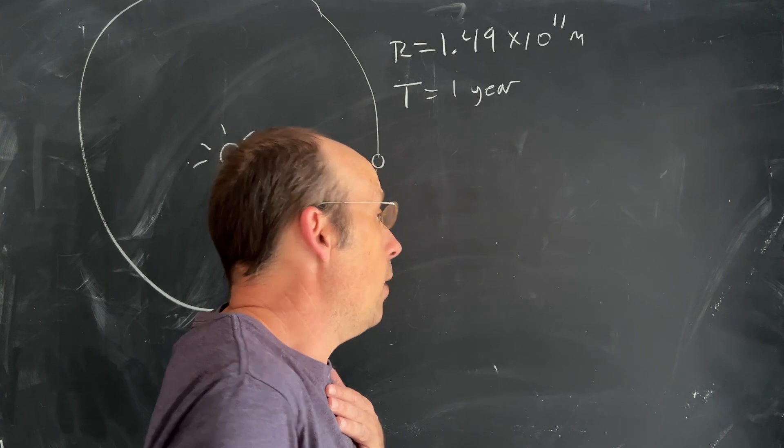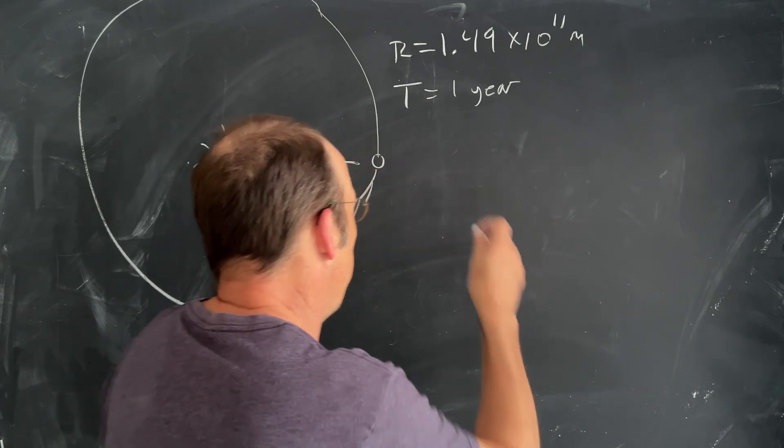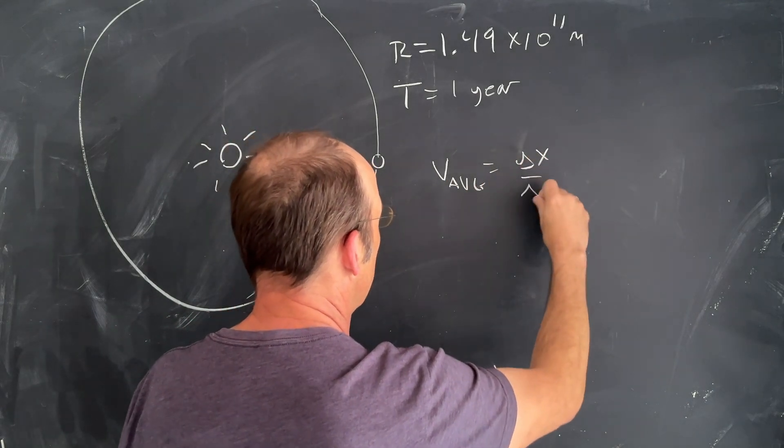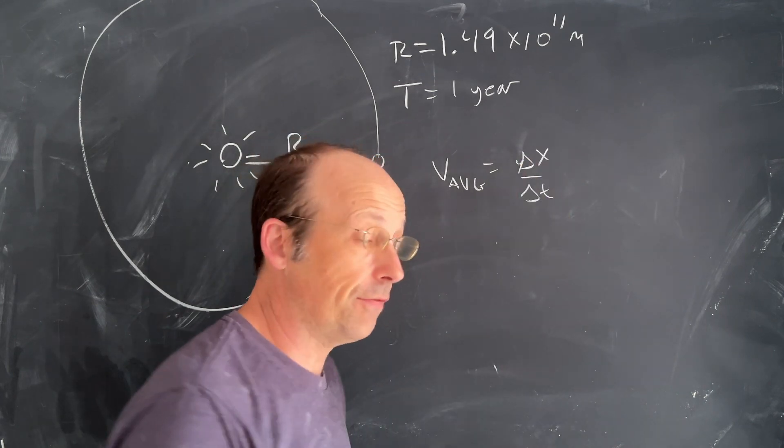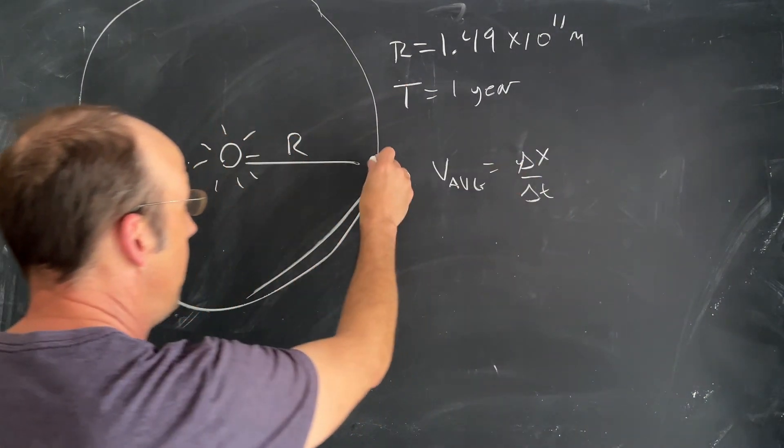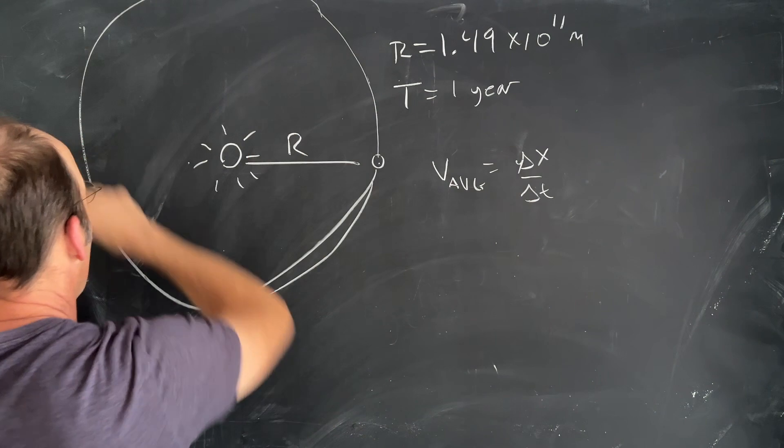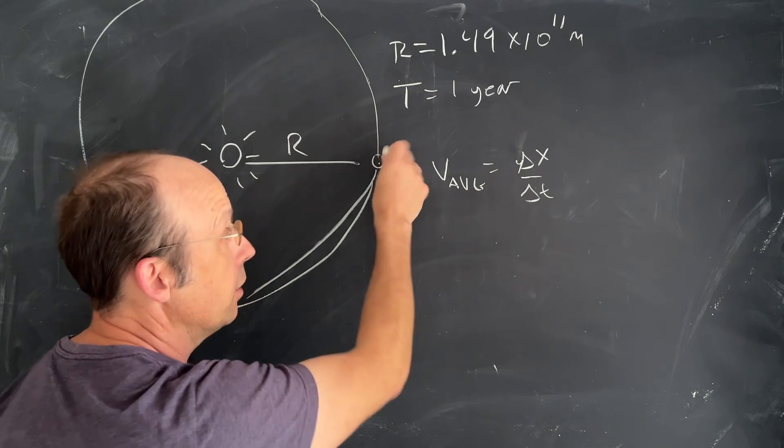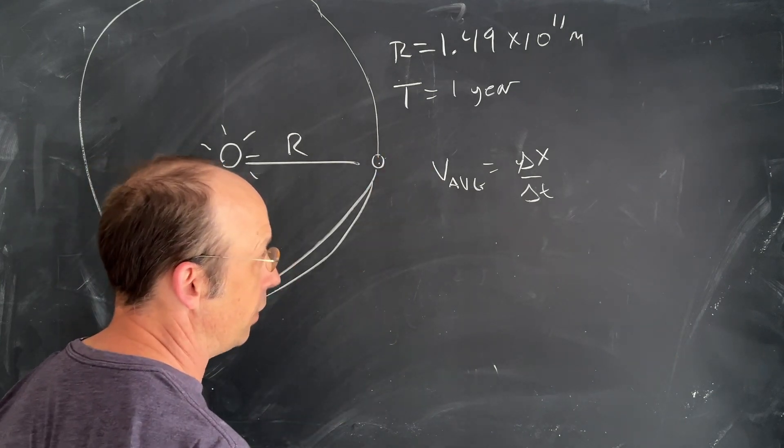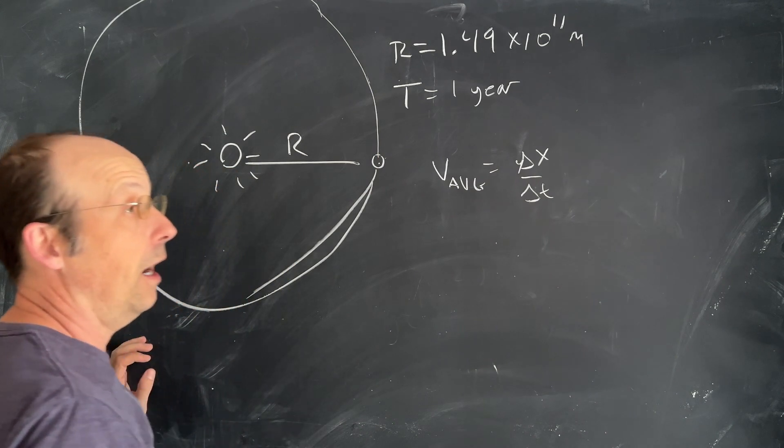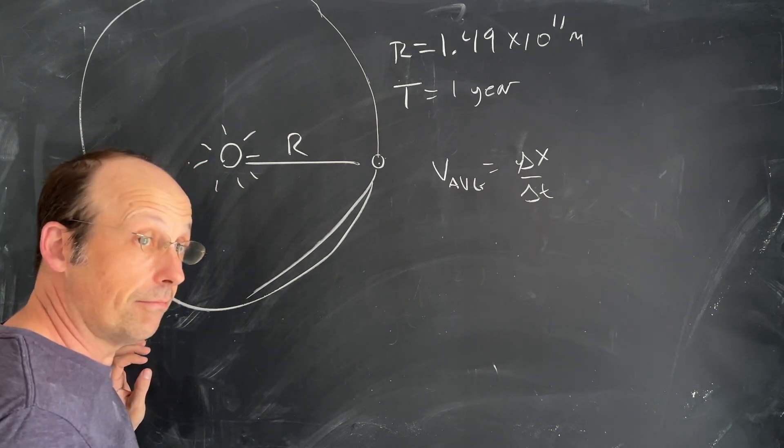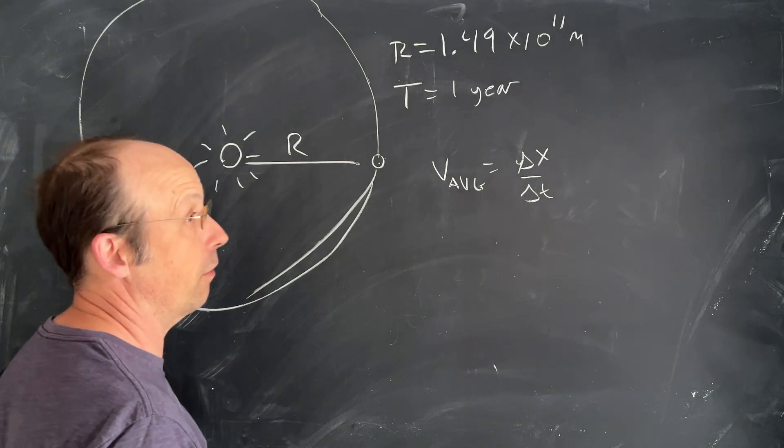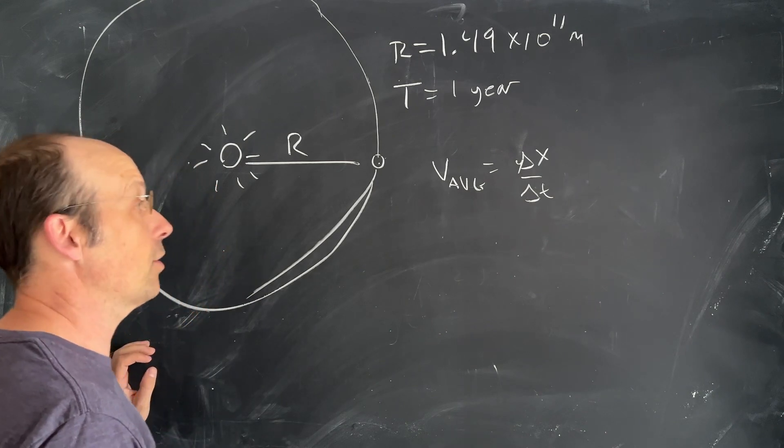We can start with our definition: v_average = Δx/Δt. But we have a problem—if the Earth goes from here all the way around in one year, it's back in the same position. That tells us the average velocity is zero over the course of a year. We don't want that; we want to know how fast it's going relative to the Sun.